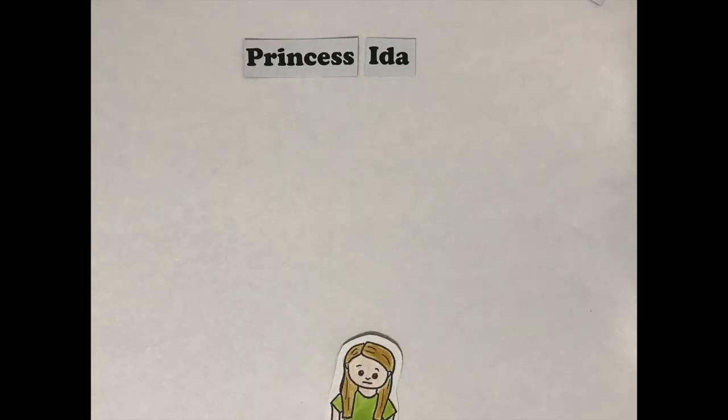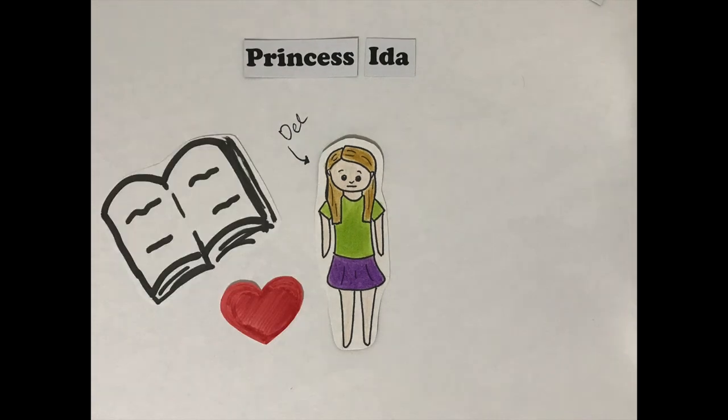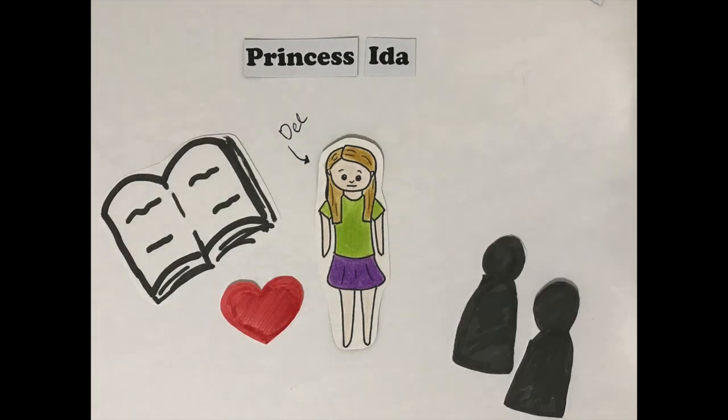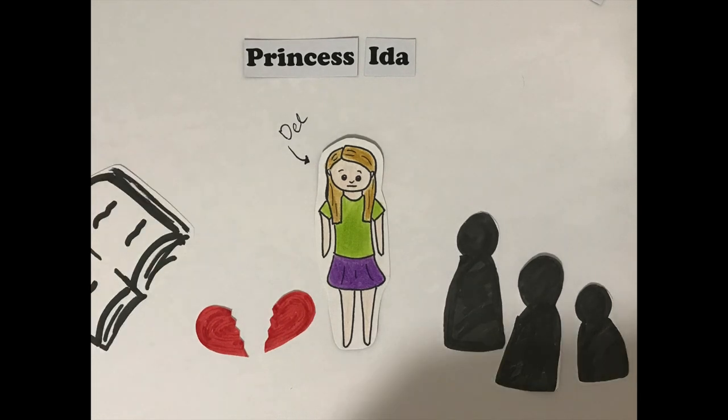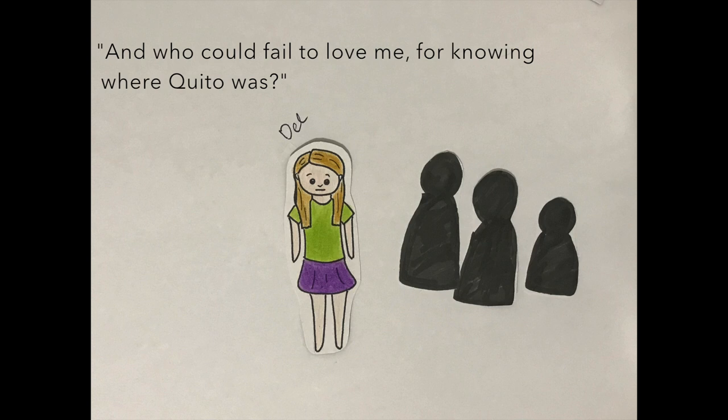Similarly, Princess Ida reveals the insecurities inherent in individuals when societal constructs create conflicts between duty and passion. This is evident when Del's passion for knowledge is condemned by the stereotypical frame of intellectuality as a dull trait. In continuation to, And who could fail to love me for knowing where Keto was?